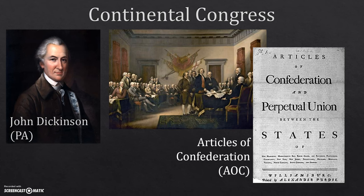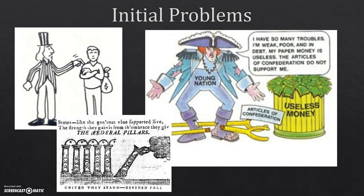One of the initial problems of the AOC is that it had no power to enact laws — it was entirely dependent on state enforcement. Today the executive branch, the office of the president, enforces laws. There was no branch like that under the Articles of Confederation. The federal government could pass laws, but it was up to each state to enforce them. If North Carolina didn't like a law, they didn't have to enforce it, creating huge discrepancies between states.